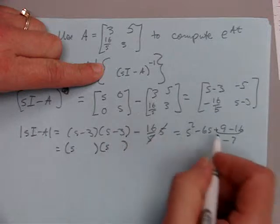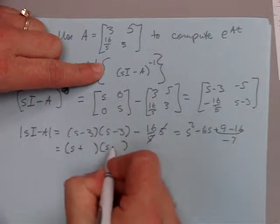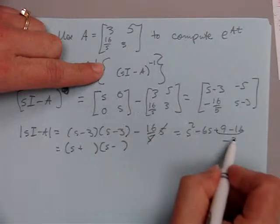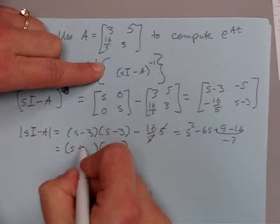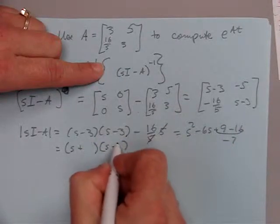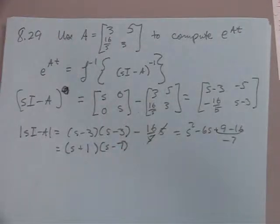Factor that. We're going to have 1 plus and 1 minus, and multiply to give us 7, so it's probably 7 and 1, and we want to add to give negative 6, so negative 7 and positive 1.